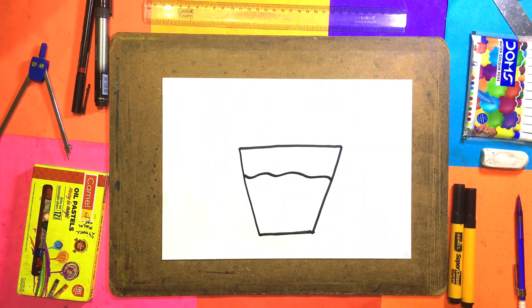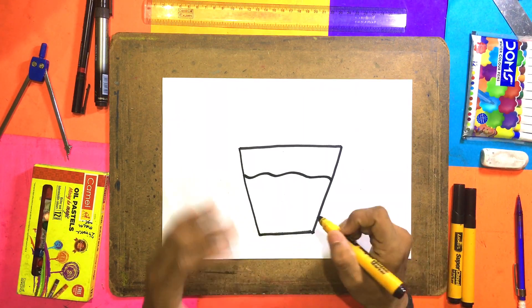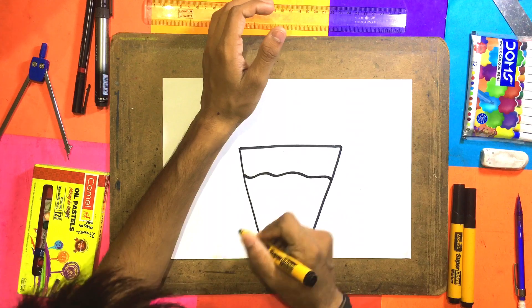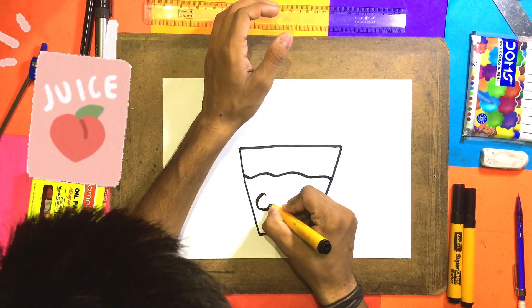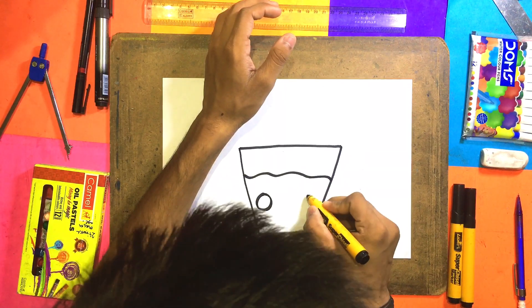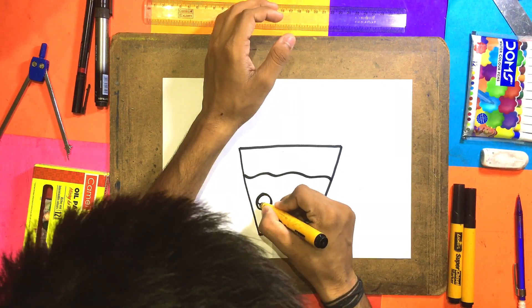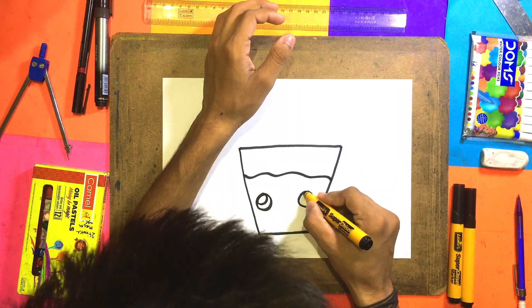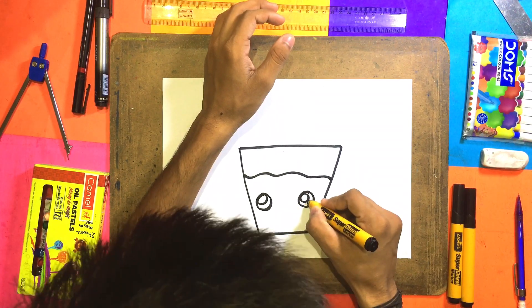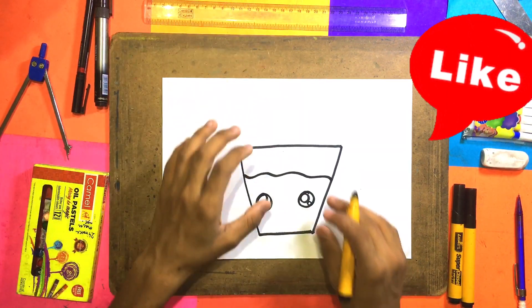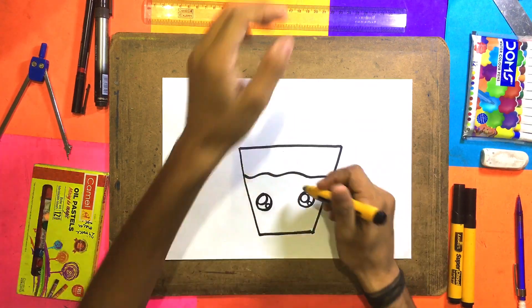Now, what we will do here. We will make an eye here, one eye here and here the other eye. Now under the eye, we will make a big circle here and below it we'll make a small circle. These two will be good. If the eyes will be good, it will be very good.